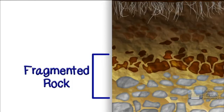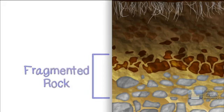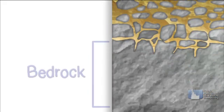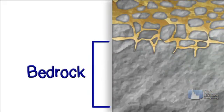Next is the fragmented rock layer, or parent material. Nothing grows at this layer. It's made of rock particles, sand, clay, salts, and minerals. At the deepest level is solid bedrock. This is the layer of rock from which soil begins to form.